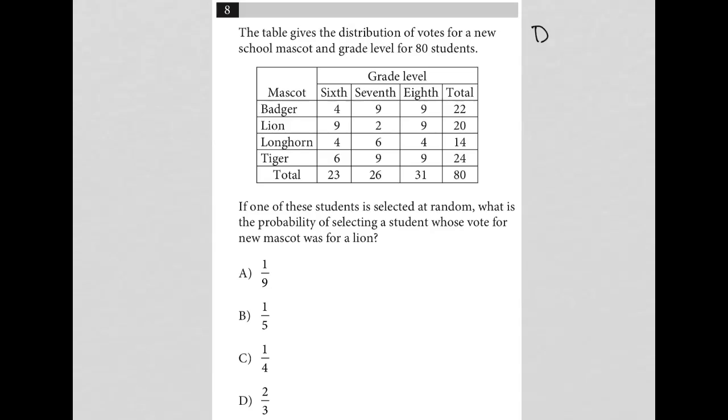So this question is a diagram question. We have a table provided. The question says the table gives the distribution of votes for a new school mascot and grade level for 80 students.